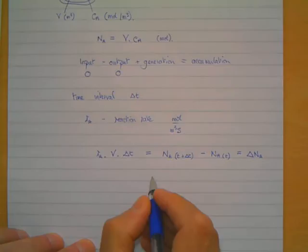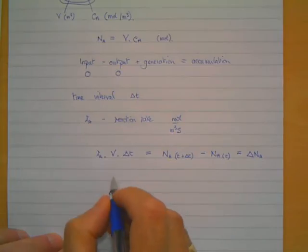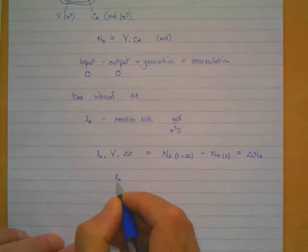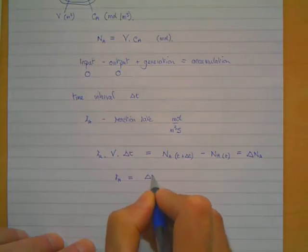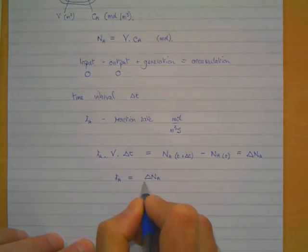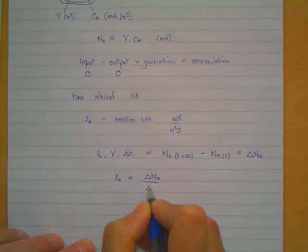And if we just rearrange that slightly, so we divide both sides by V and delta t, we get that rA equals delta NA divided by delta t multiplied by 1 over V.